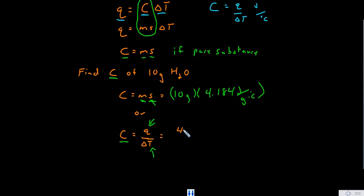It's here, it's 4.184 joules of heat were absorbed and the change in temperature was 0.1 degrees Celsius. In both of these cases, you should find that the heat capacity is 41.84 joules per degree Celsius.